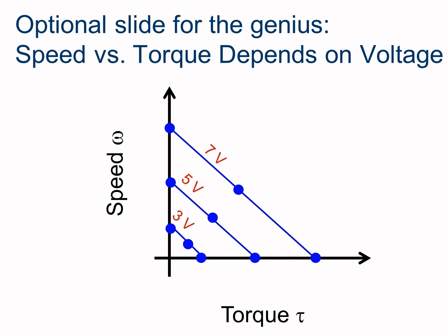This slide shows that where this line is placed and where the y and x-intercepts are, or where the no load speed and the stall torque are, is dependent on the voltage. The greater the voltage you provide to that motor, the bigger the area is under that curve. This is something we're going to cover in more detail in Unit 3.